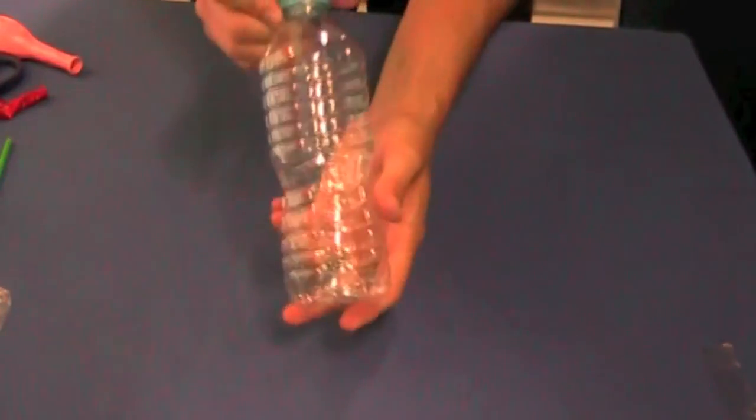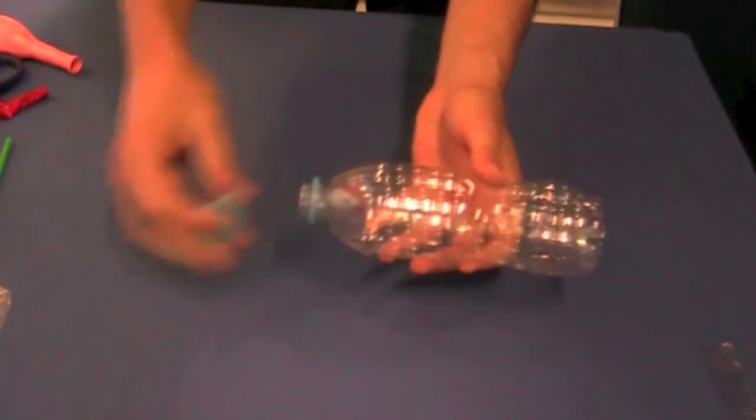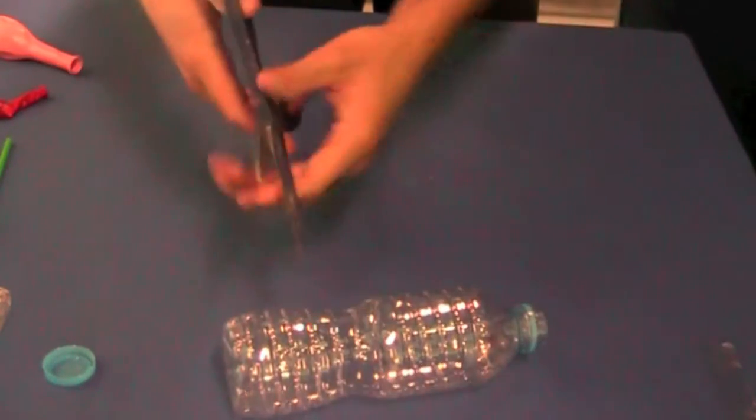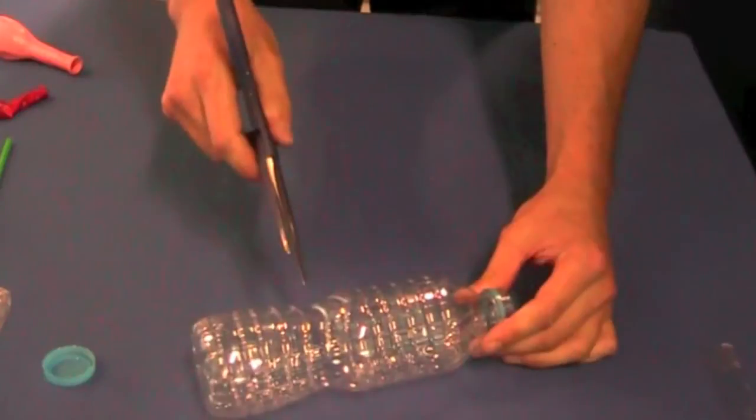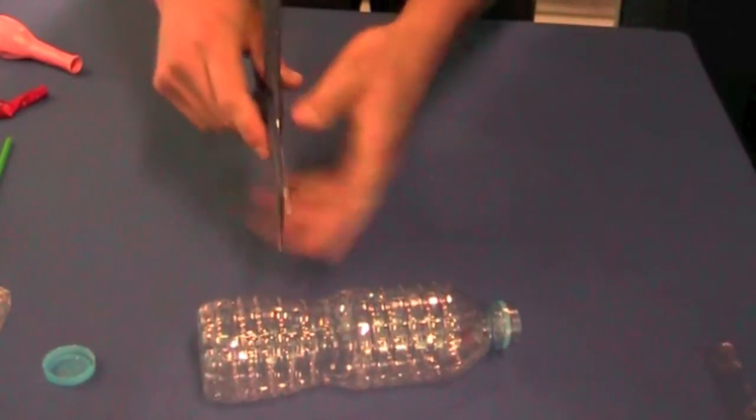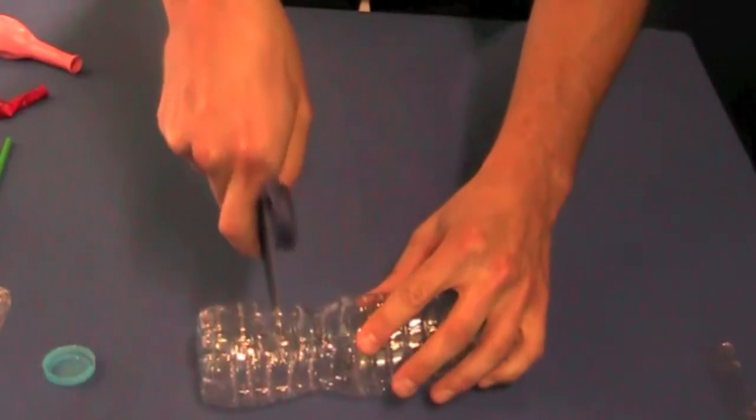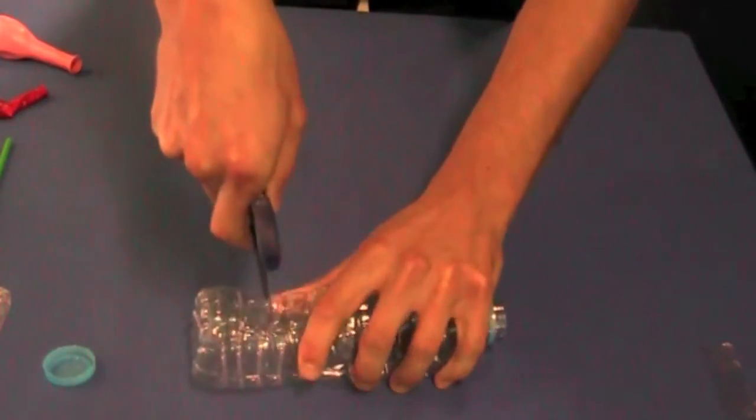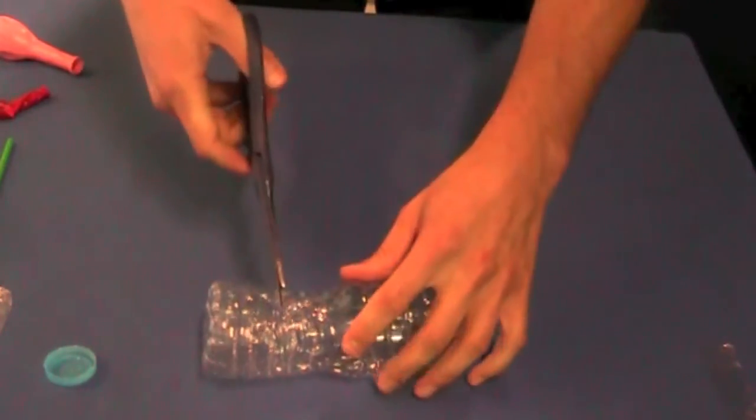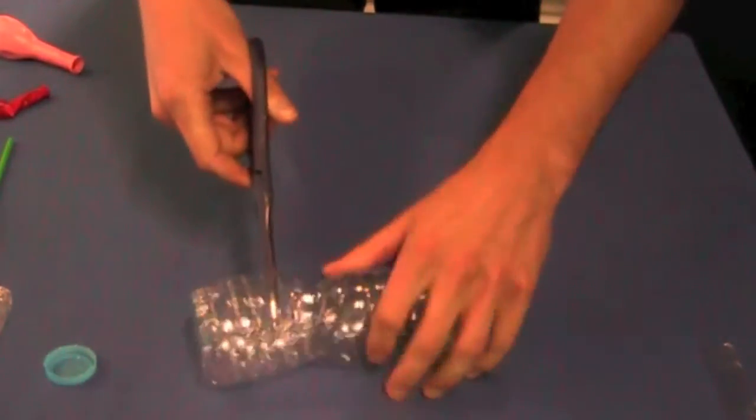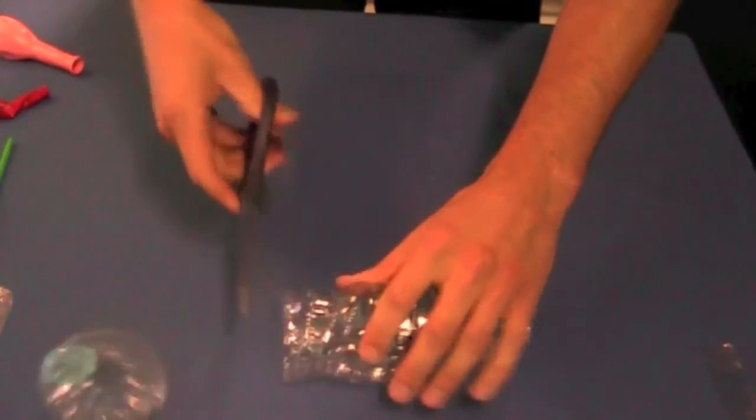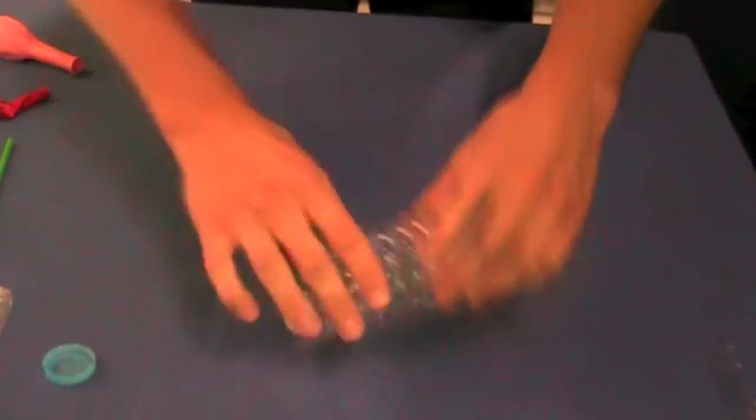So step one, take your bottle, remove the cap, and use your scissors. And we're going to cut the bottle two thirds of the way down. So we're taking the bottom third off. Scissors are sharp, so ask for an adult's help if you need it. There we go.